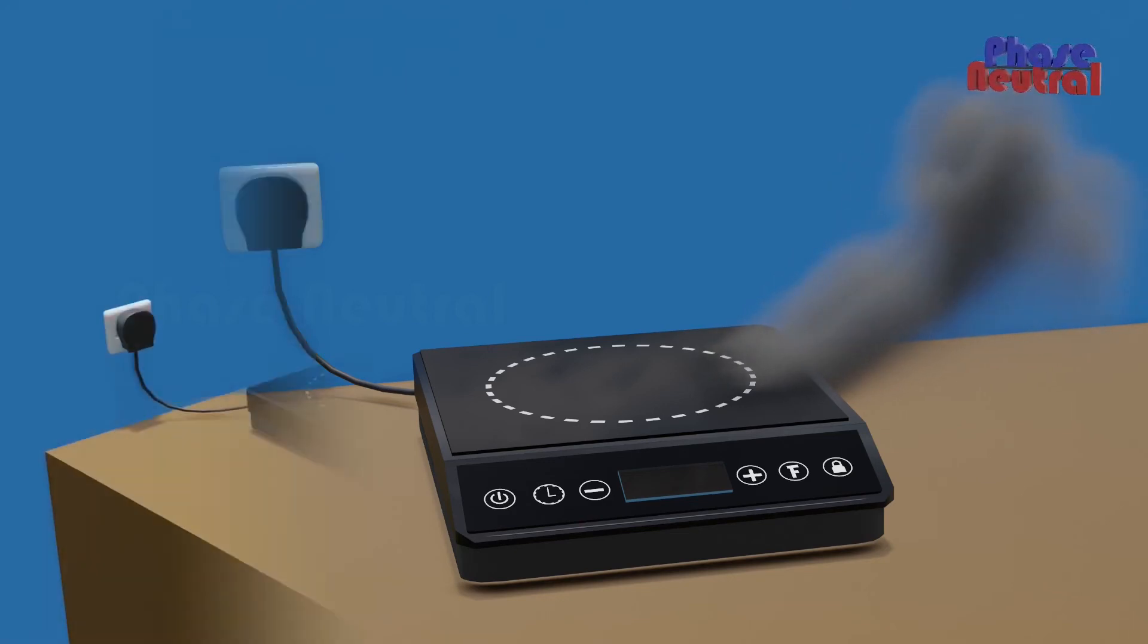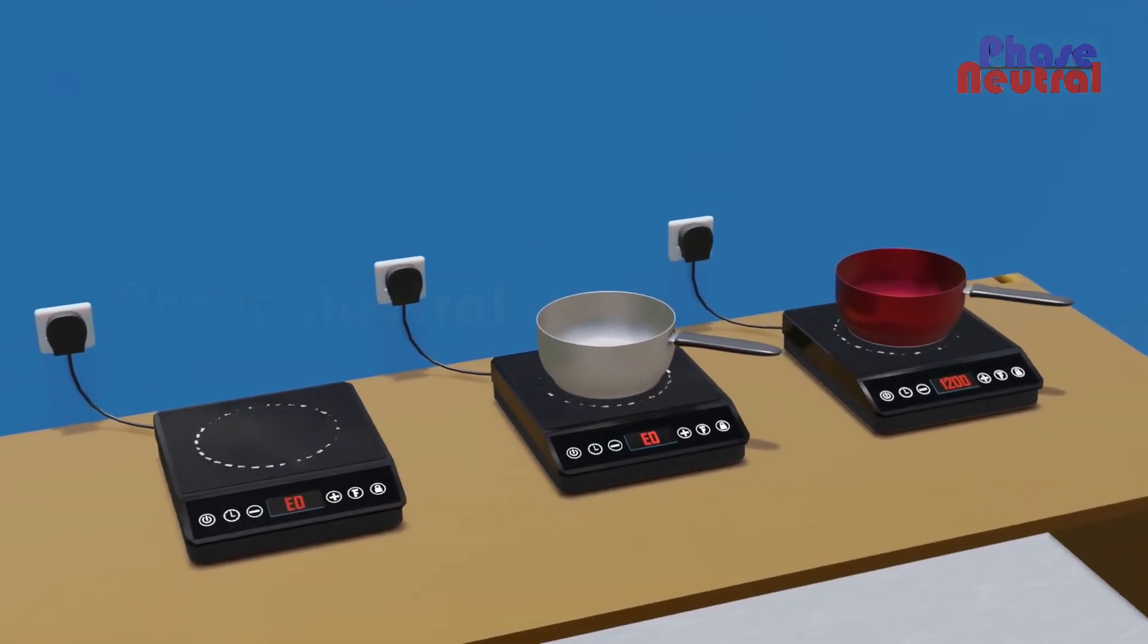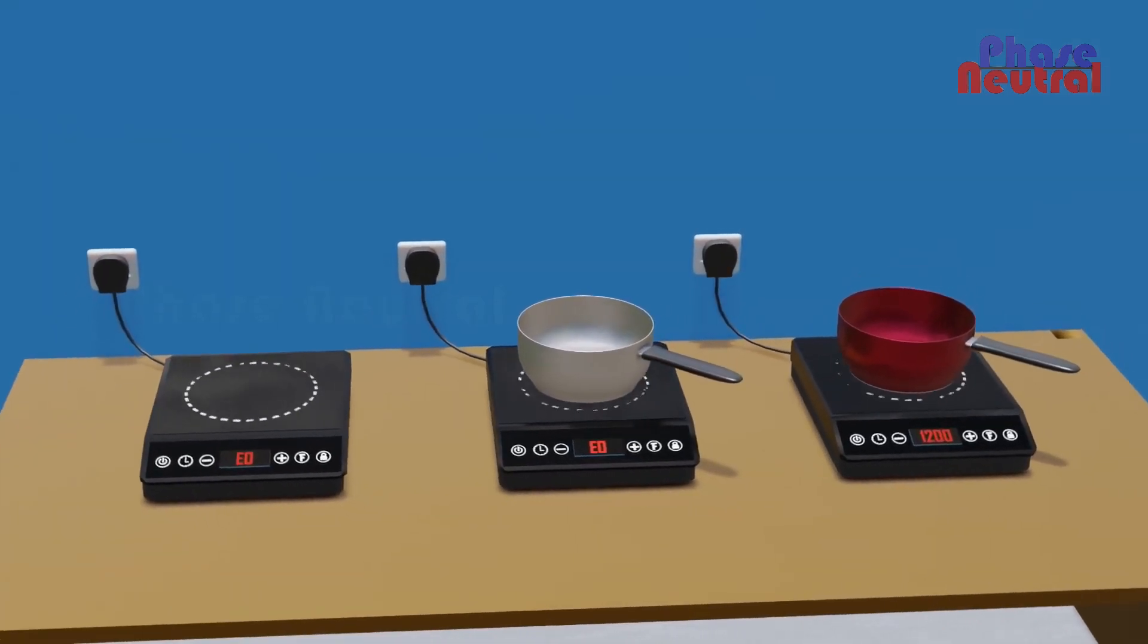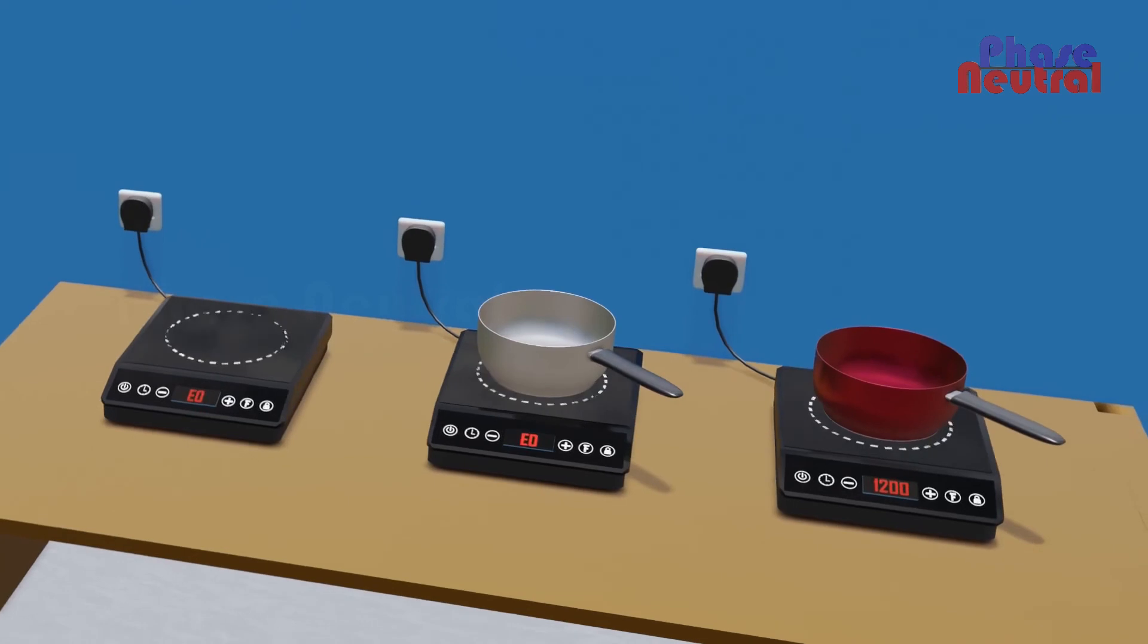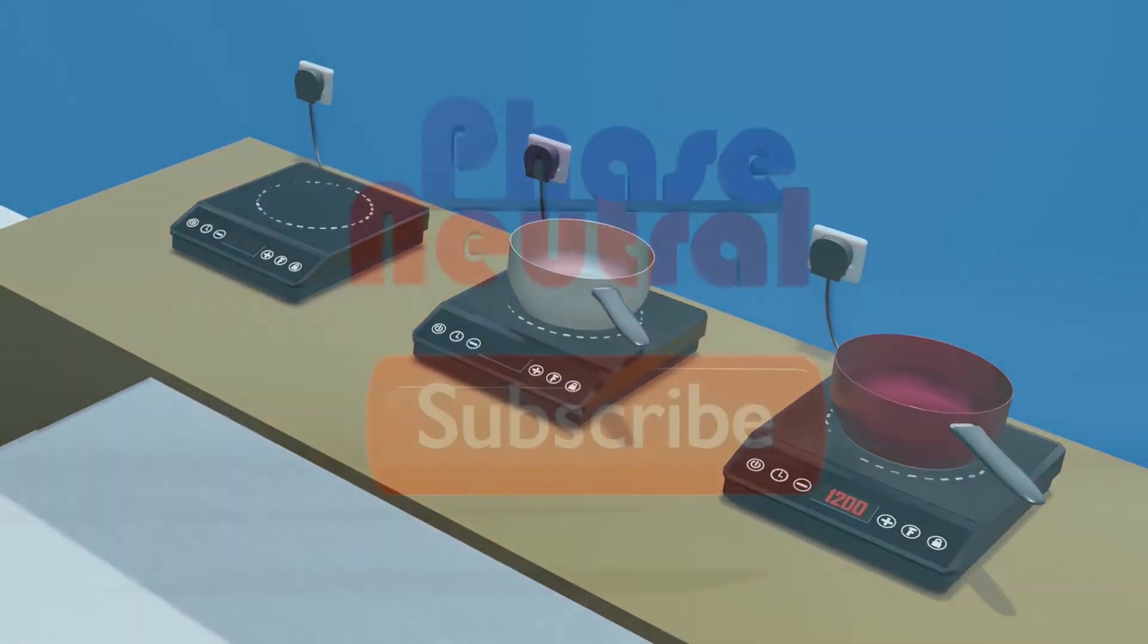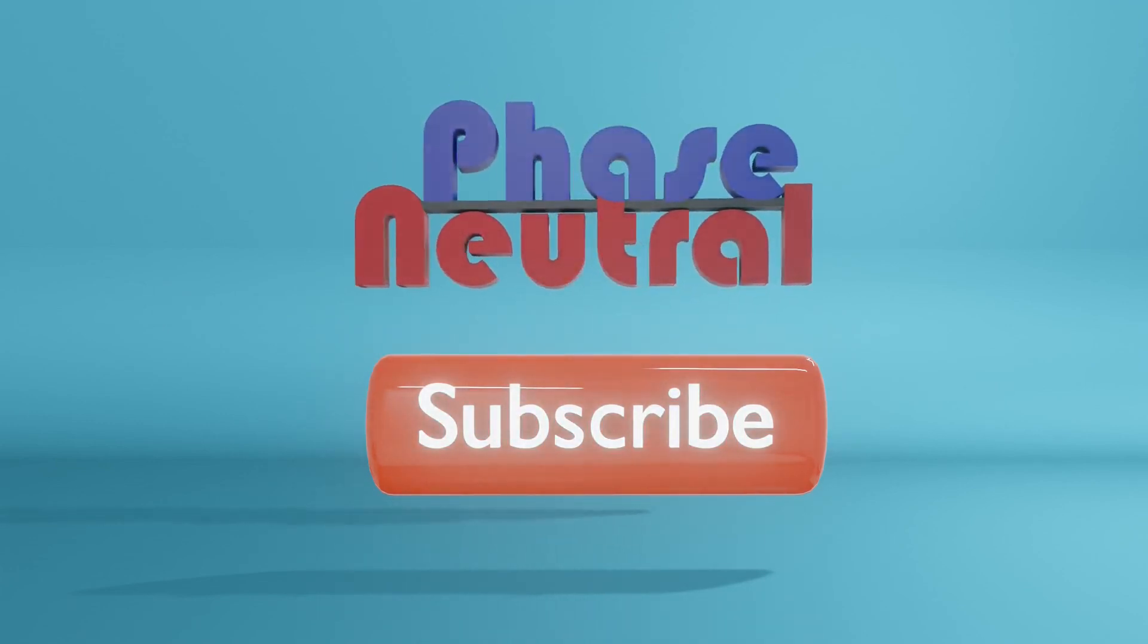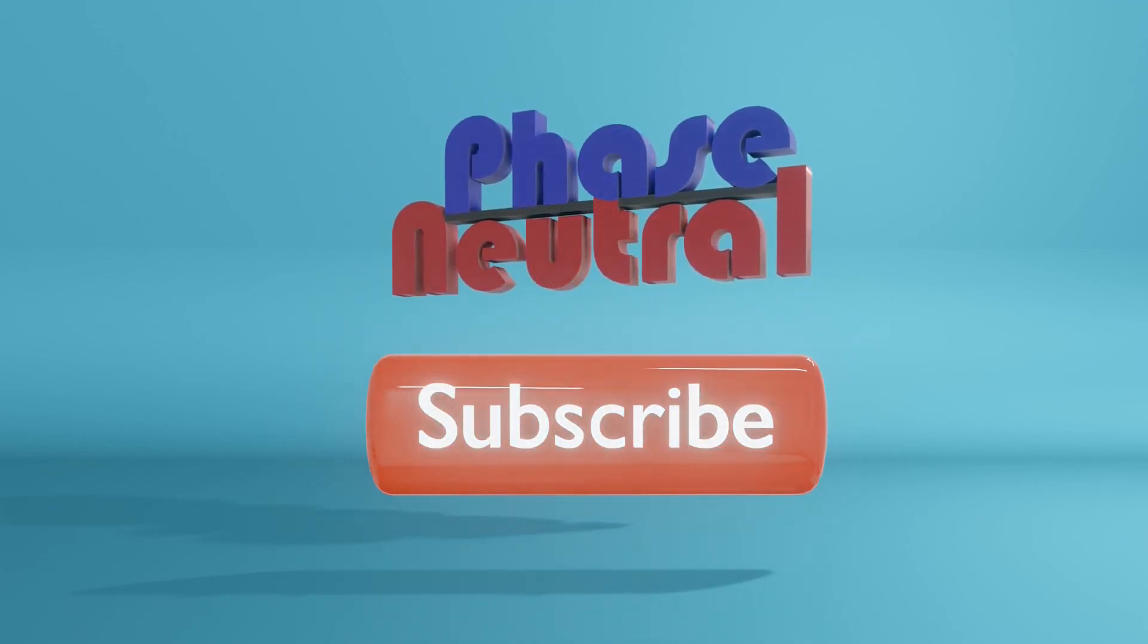The popular pan detection systems are pulse pan detection and current pan detection. If you'd like to know more about pan detection circuit working, please comment below. We will make another video with more details. If you like this video, please subscribe to our channel for more videos about technical doubts.